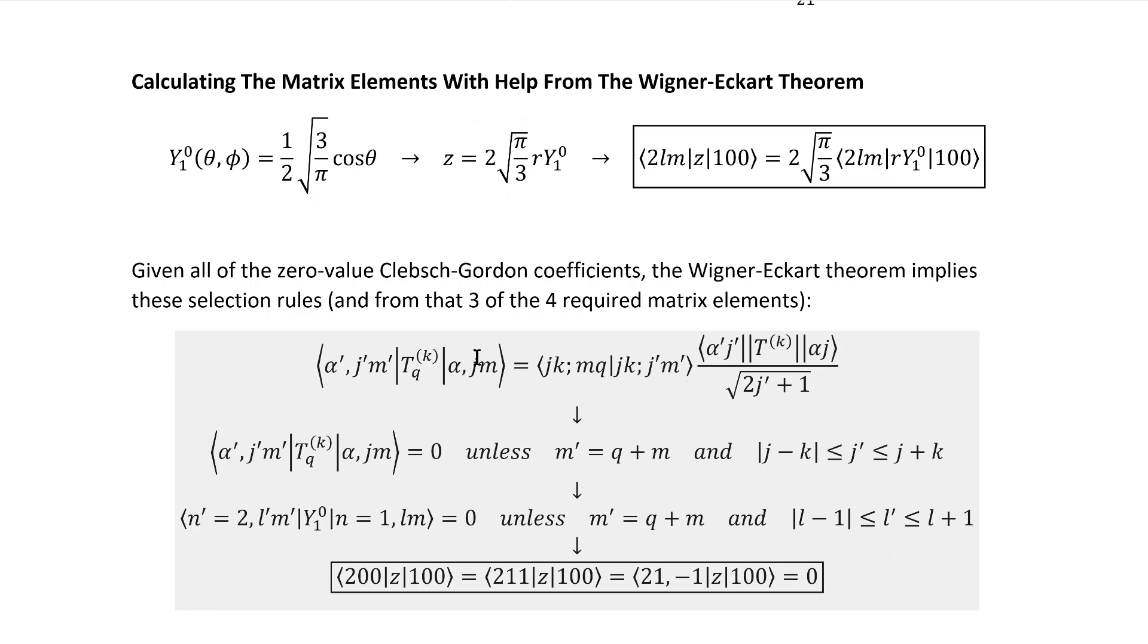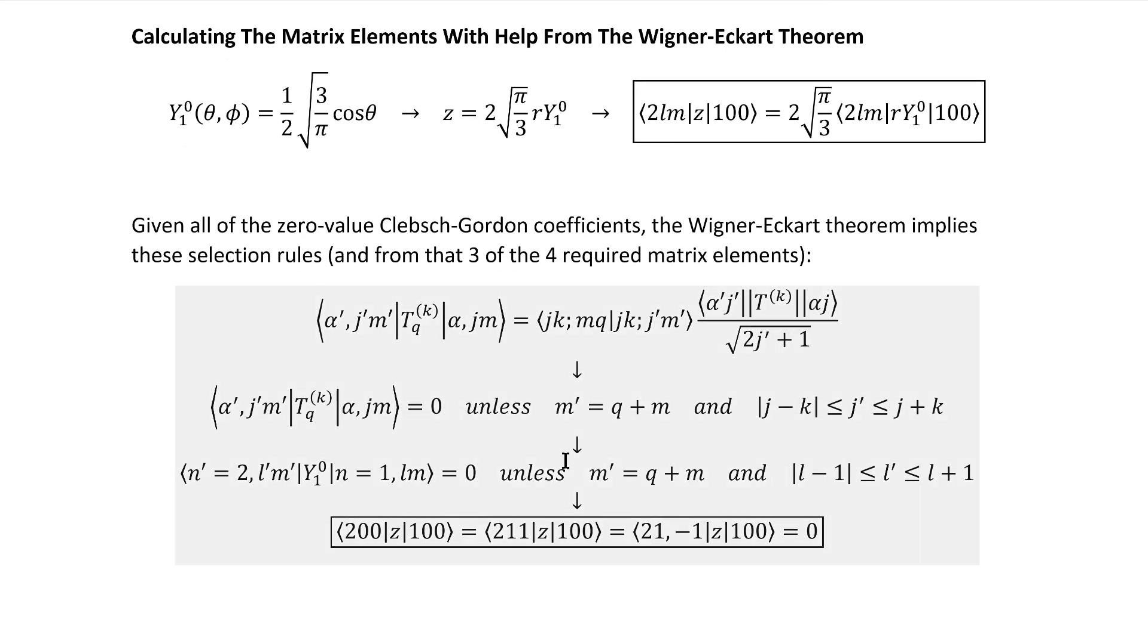This, as you may remember, is the famous Wigner-Eckart theorem. Given which Clebsch-Gordon coefficients turn out to be zero, we have these selection rules immediately, which, if applied to our case, take this form.